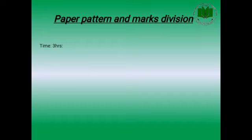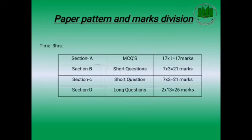Now I am going to discuss the paper pattern and marks distribution for the paper of chemistry by the Federal Board of Education. The total time allocated for this paper is three hours. The paper comprises of four sections. Section A is of MCQs — 17 MCQs will be asked, each carrying one mark, so total marks allocated for Section A are 17.